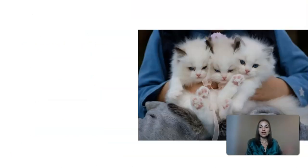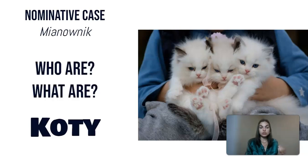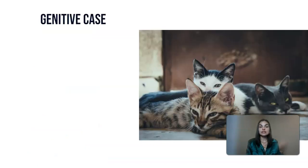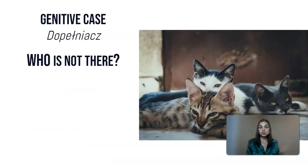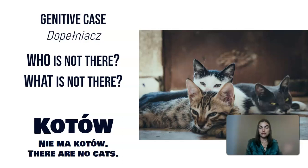That was all the singular form. Now let's look at the plural form. In the nominative case, Mianownik — 'who are' or 'what are' — we have Koty. Są koty — there are cats. The genitive case, Dopełniacz — 'who is not there, what is not there' — is Kotów. Nie ma kotów — there are no cats.